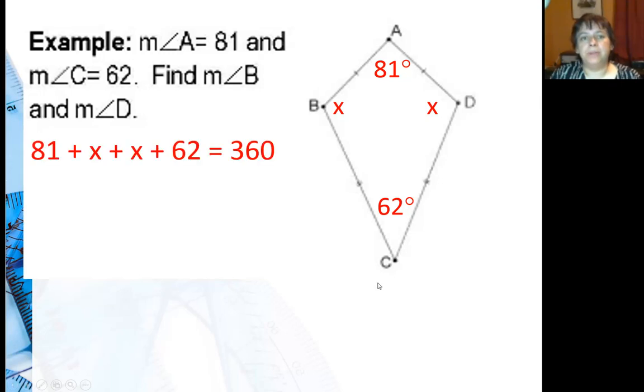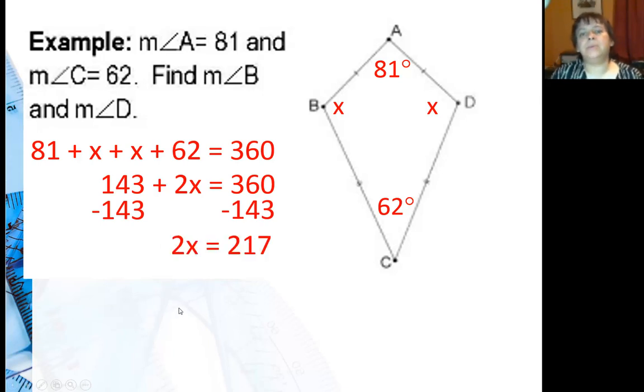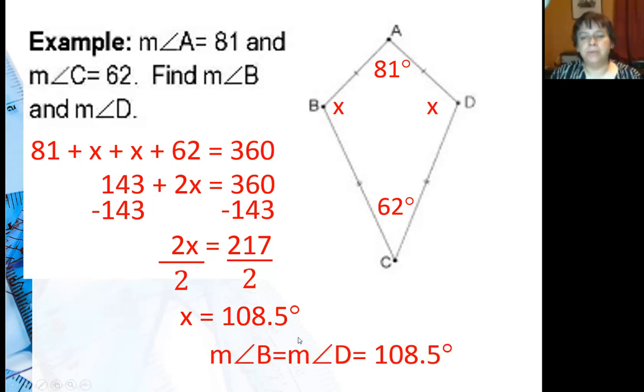Since this is a quadrilateral, all the angles have to add up to 360. So that's what I did, add up all the angles and make them equal to 360. Combine like terms, and then subtract the 143 from both sides, and I get 2X equals 217. I can divide both sides by 2, which tells me that X is 108.5 degrees. Therefore, angle B and angle D both measure 108.5 degrees.